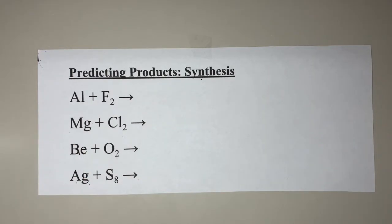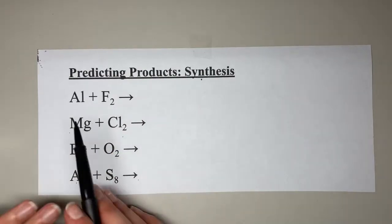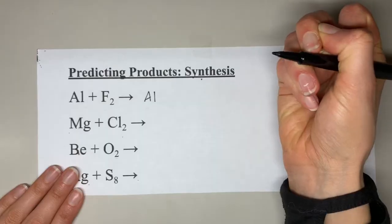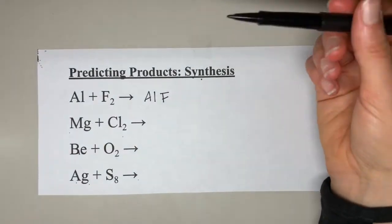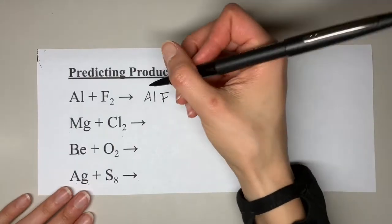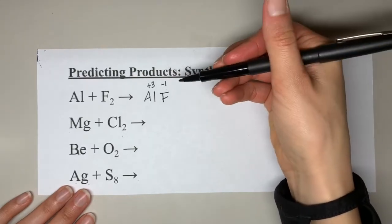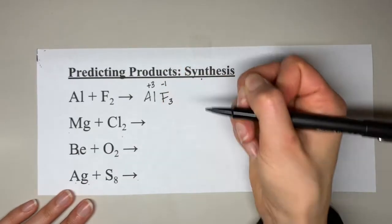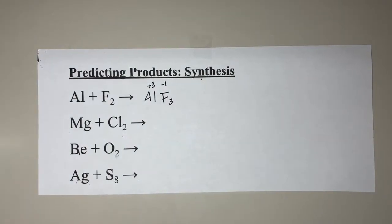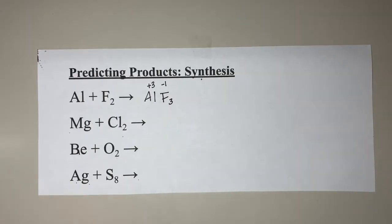Let's go through and predict the products. All we're going to do is put these two elements together into a single compound — a compound made up of aluminum and fluorine. Every time you make a new compound, you need to crisscross. Aluminum is a +3 and fluorine is a −1. When we crisscross, the one comes down by the aluminum (but we don't write that), and the three comes down by the fluorine, giving us AlF3. We put aluminum and fluorine together into a single compound, crisscross, and that is the product.